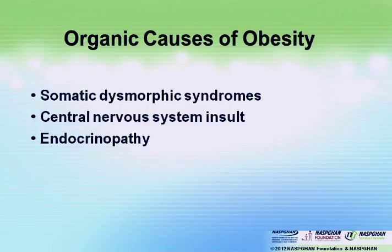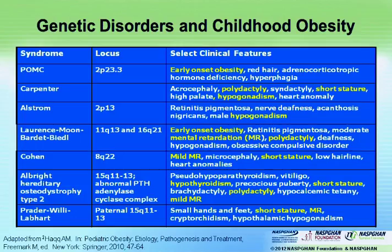You want to think about: could this patient have a somatic dysmorphic syndrome? Do they have a history of a CNS insult? Do they have some features of endocrinopathy? Because these may be somebody that has more than the garden-variety metabolic syndrome.